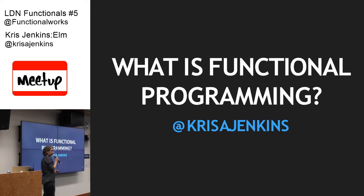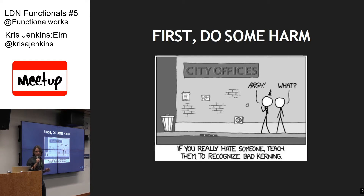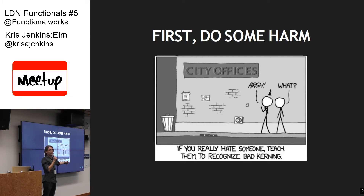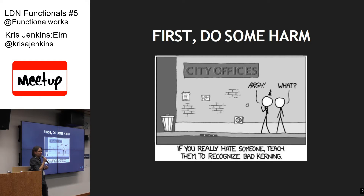But before I get on to that, I thought I'd start with an XKCD joke which you've probably seen. If you really want to talk to people, teach them to recognize bad kerning. And then from then on, every sign they see is a potential point of harm to their brain. This is what I'm going to try and do tonight — put something in your head so that from now on every piece of code you look at will bring you physical pain until you fix it. That's my gift to you for the evening.